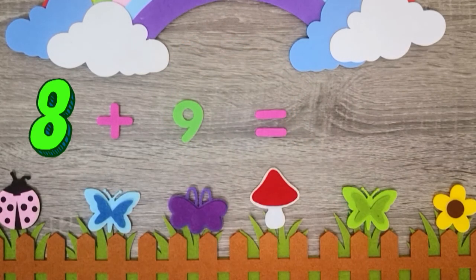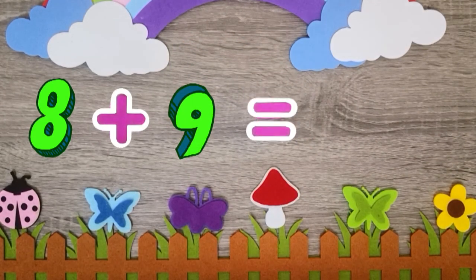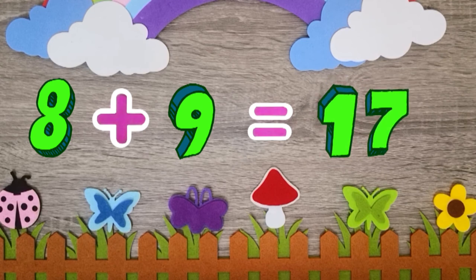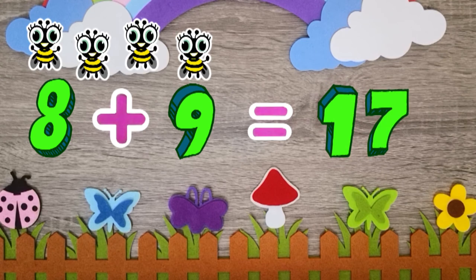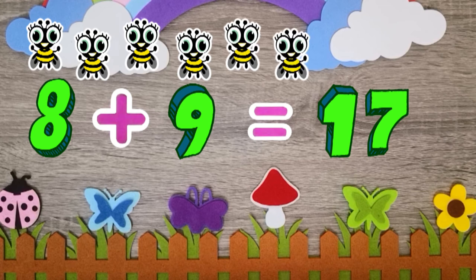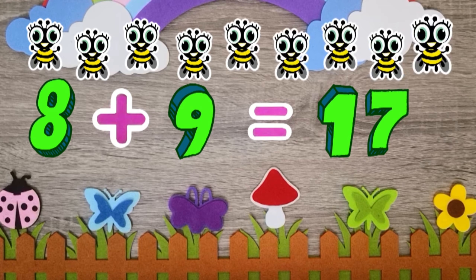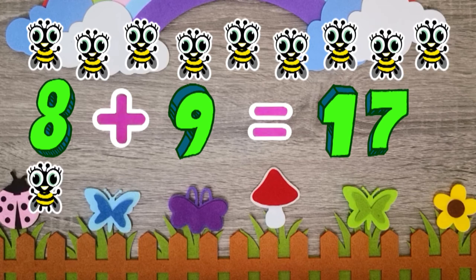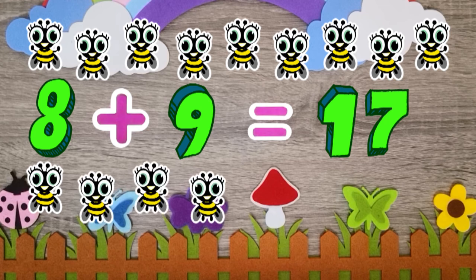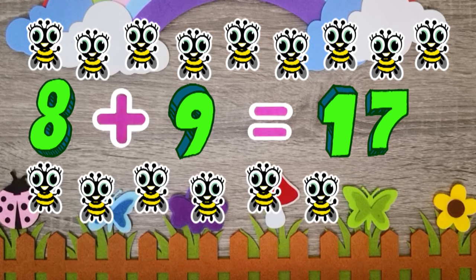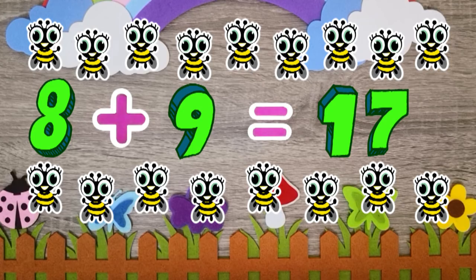8 plus 9 equals 17. 1, 2, 3, 4, 5, 6, 7, 8, 9, 10, 11, 12, 13, 14, 15, 16, 17.